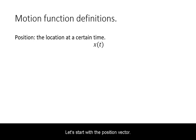Let's start with the position vector. It gives you the location of an object of interest at a certain time. This can be constant for stationary objects, but it can change over time for moving objects. We will designate this as x(t) for position function of time.